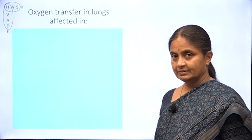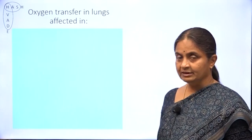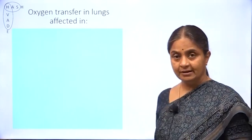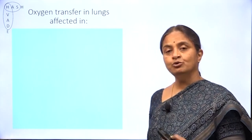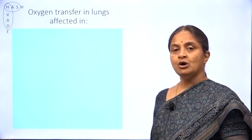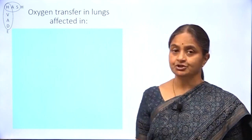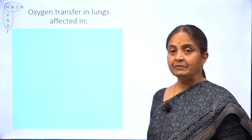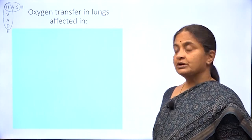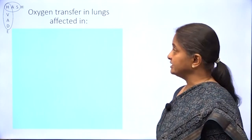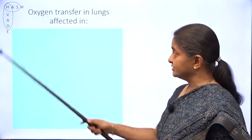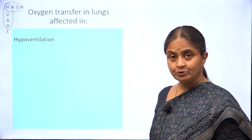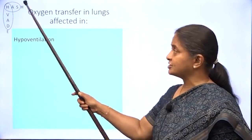To review what we did in the previous lecture, we saw that oxygen transfer in the lung — what we call VO2, or oxygen consumption at the tissue level, or oxygen uptake at the lung level — is the same. VO2 is affected in the conditions listed here. Remember the mnemonic that we have been using: HASH and WADE.